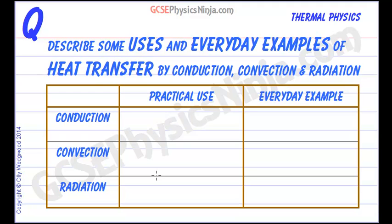Heat transfer by conduction, convection and radiation happens all around us, all the time. So here are some examples — some practical uses of conduction, convection and radiation heat transfer, and some everyday examples, some effects that you might observe.